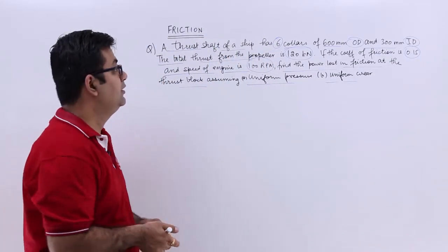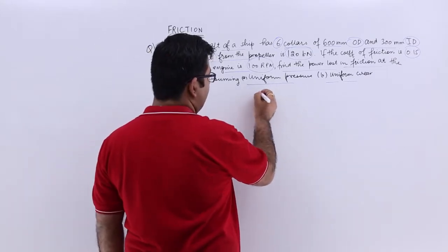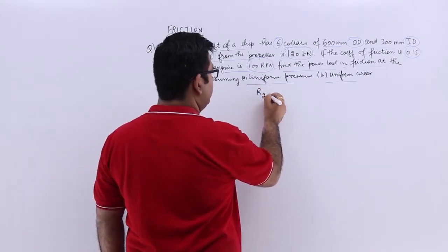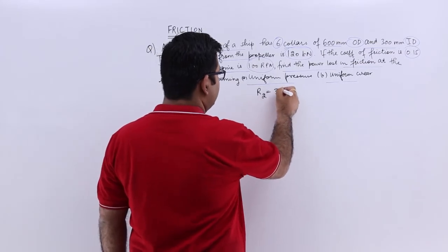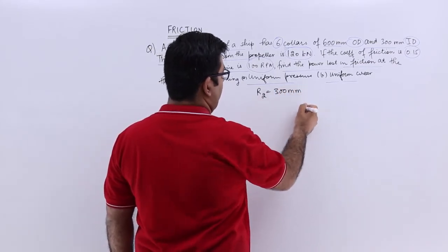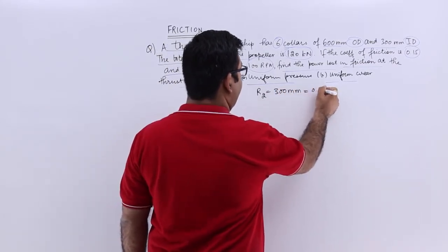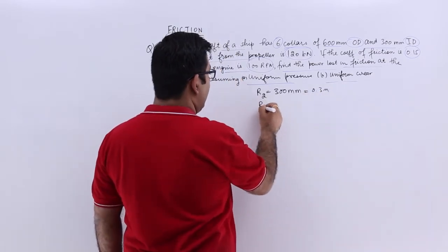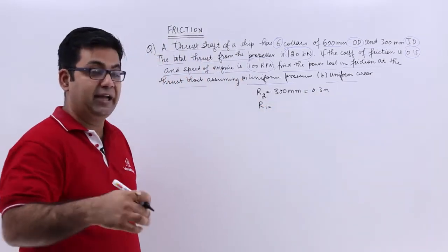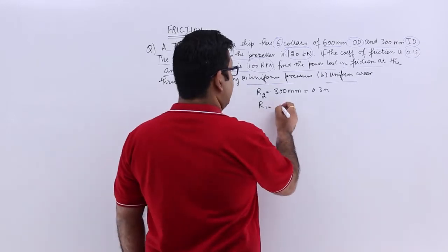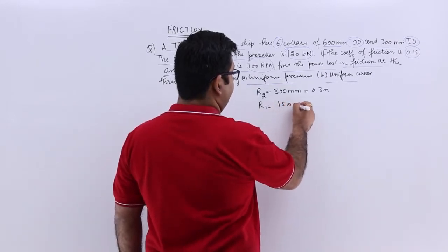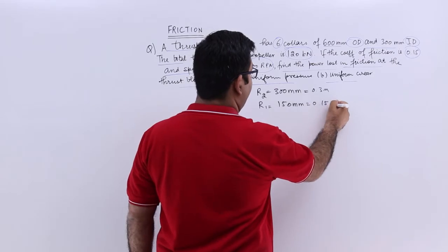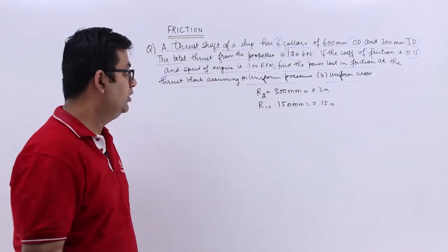Now, data. Your OD, let us say R2, radius would be 300 mm, that is equal to 0.3 meters. R1, that's the ID, is 150 mm, that would be 0.15 meters.